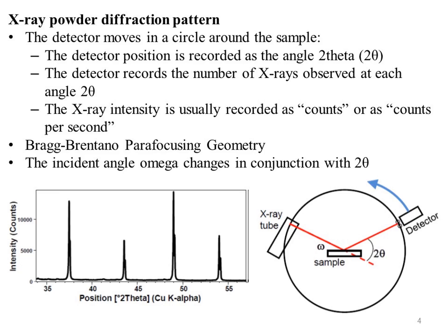This is the geometry of the Bragg-Brentano parafocusing instrument. This is the X-ray tube, here is the sample, and this is the angle omega. Here is the angle 2-theta. The detector moves 2-theta to record the diffracted beams. As a result, we get a diffractogram, which is a plot of the intensity — as counts or counts per second — against 2-theta.